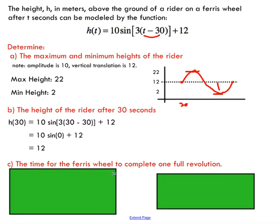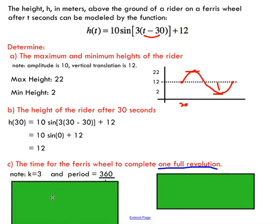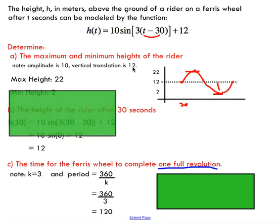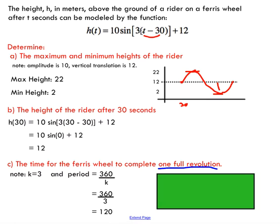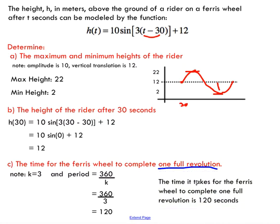Part C, the time for the Ferris wheel to complete one full revolution. One full revolution is usually referred to as the period, the time it takes to complete one full revolution. To determine the period, we look at our formula, which is 360 over K. Our K value is 3, so 360 over 3. The time it takes for this rider to go through one full rotation would be 120 seconds.